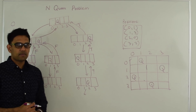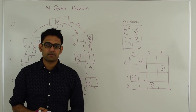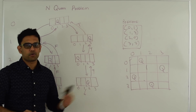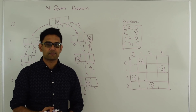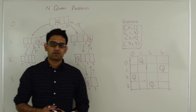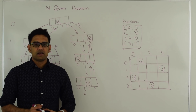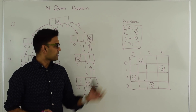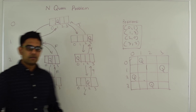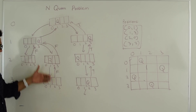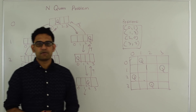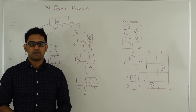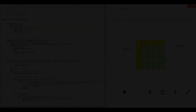The time complexity for this algorithm is exponential because of the backtracking going back and forth — in the worst case it can be exponential. The space complexity is O(n) because the recursion in the worst case will be n levels deep for an n x n board. Next let's look at the code.